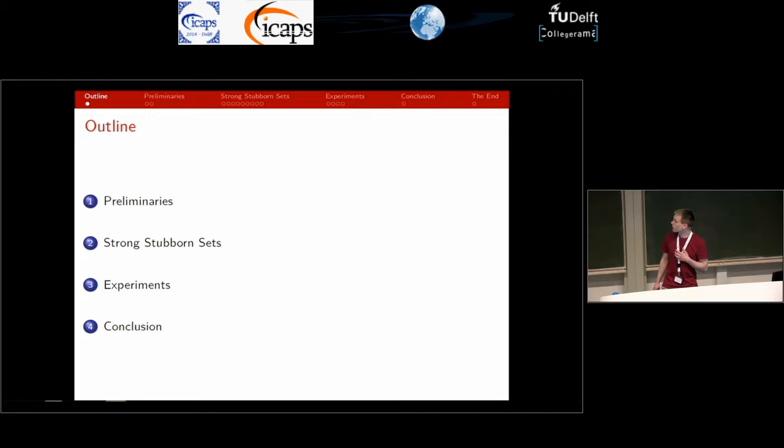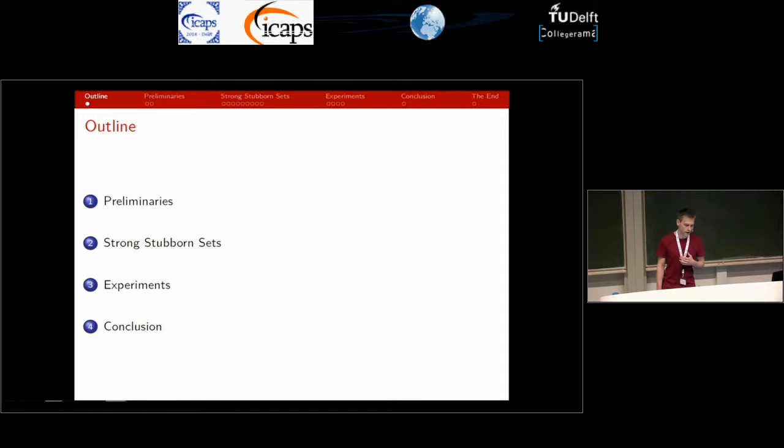This is the outline of the talk. First I'm going to introduce some relevant background and show you what we mean by resources exactly. Then I'm going to recap the strong stubborn set definition from planning, point out the particular issues that arise from the consideration of resources, and I'll show you our attempts to address those issues.